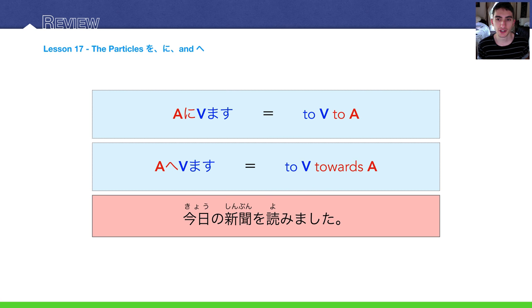Lesson 17, moving on. We have two grammar structures here: E-ni-vimasu and E-e-vimasu. Now, remember this character is he, but it is pronounced ee. That's only because it's a particle.